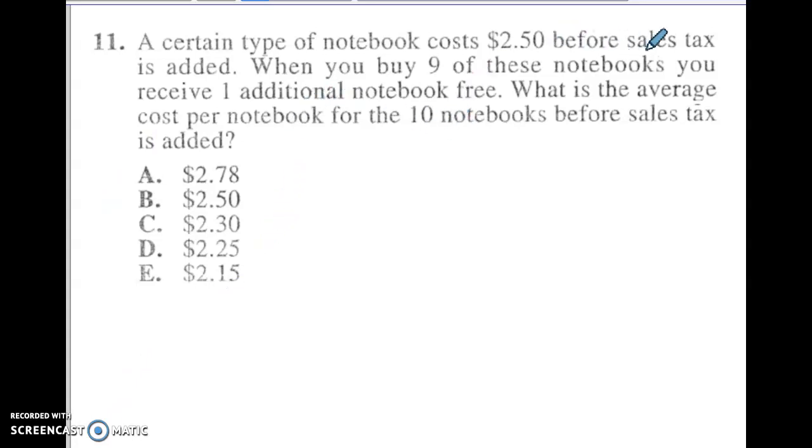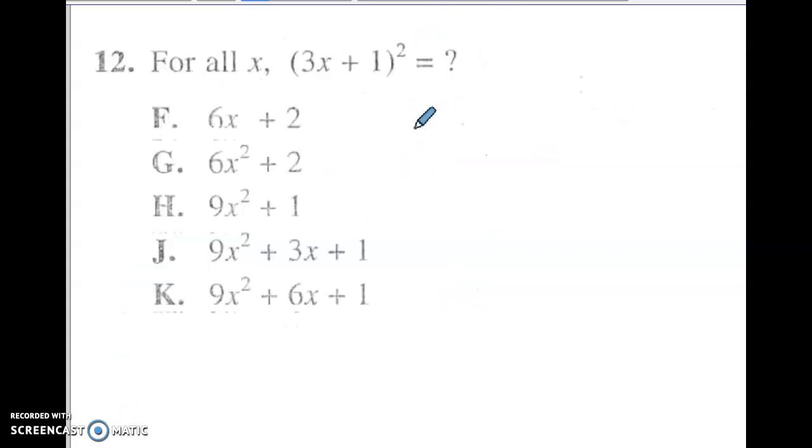All right, so try this one, and then come back and check your answer. All right, so $2.50 for sales tax. You buy nine of these notebooks and you receive one free. What is the average cost for the 10 notebooks? All right, so what you really paid is 9 times $2.50 because you got the 10th one for free. All right, so multiply those together to get $22.50. So that's how much you paid. And then you want to know the average. So you would do that amount you paid divided by 10 notebooks. And that would get you $2.25 per notebook on average in the letter D.